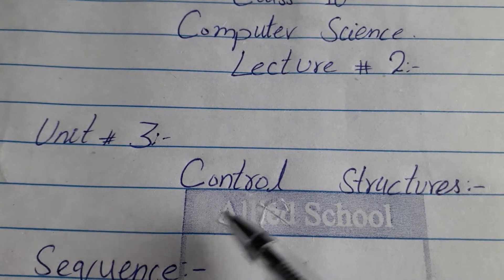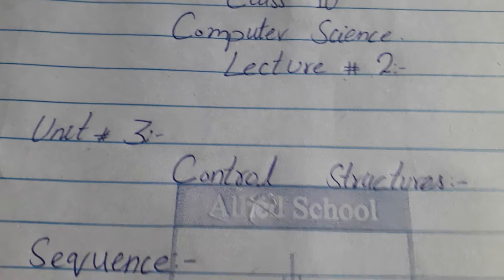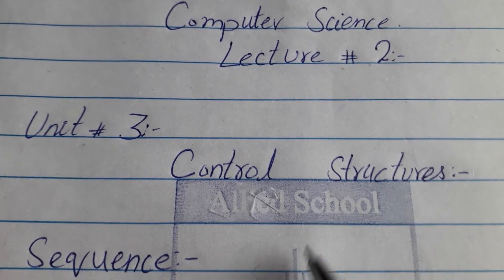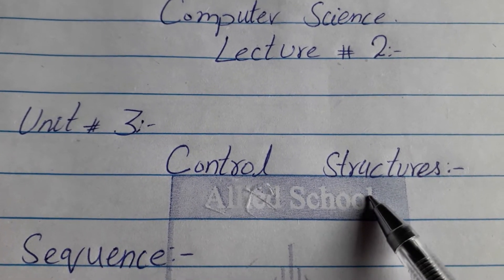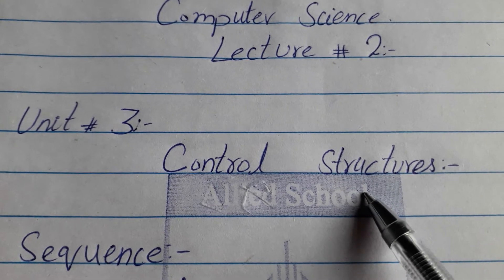Unit number 3, control structures. Students, we have seen this introduction of control structures. Control structures which are used to control your program's execution.